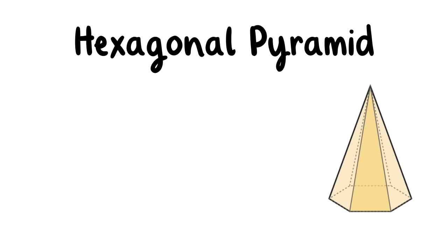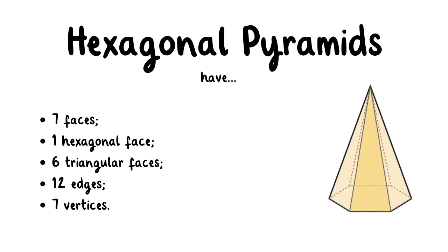This is a hexagonal pyramid. Hexagonal pyramids have seven faces, one hexagonal face, six triangular faces, 12 edges, and seven vertices.